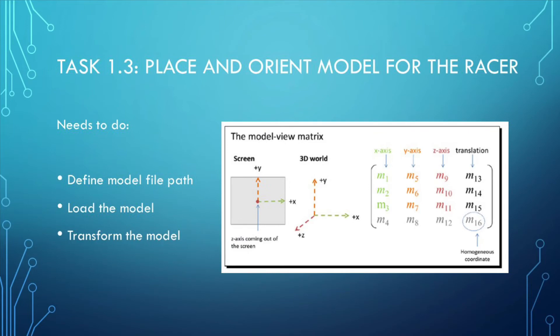In this task, it is required to load a racer model from the data provided to replace the racer sphere that currently represents the racer. To replace the sphere with the model, it is necessary to specify the file path and set the self.model member variable to that path. After loading the model, it is necessary to move the model to the racer's position, rotate the model to align with the racer's heading, and appropriately scale the model.